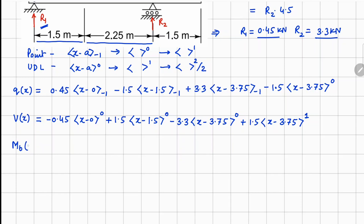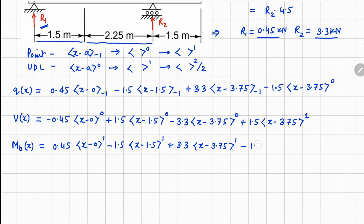One more integration with a negative sign gives the bending moment: 0.45⟨x − 0⟩¹ − 1.5⟨x − 1.5⟩¹ + 3.3⟨x − 3.75⟩¹ − (1.5/2)⟨x − 3.75⟩².